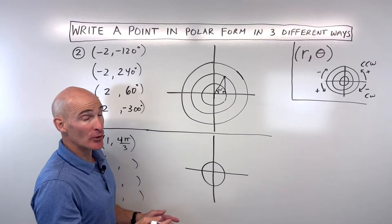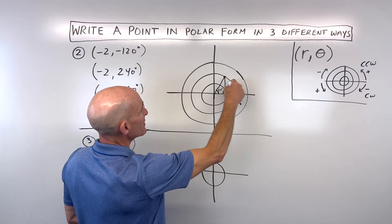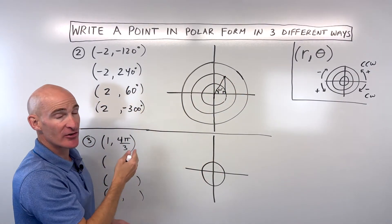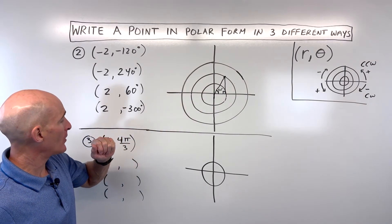That can help you a little bit. You can say to yourself, I'm going like this is 360 but less 60. It's 300 degrees. You can use this as a guide to help you.